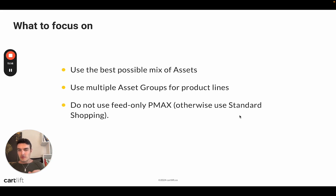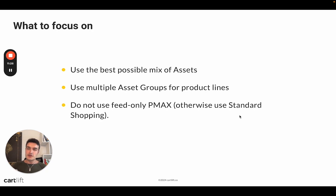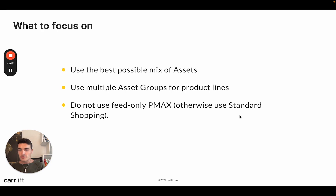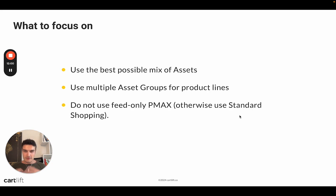Do not use the feed-only Performance Max campaign. Instead, use standard shopping if you don't have great assets. I see this all over the place — brands without amazing assets still want to use Performance Max and do so with shopping only, without using assets. But in that case, you're not getting the best out of shopping — all the data and multiple bidding strategies — and you also don't get the best out of Performance Max, which is going out to all those networks: shopping, search, display, demand gen, YouTube. You end up somewhere in the middle, which is quite the ugly place. If you're going to use shopping only or feed-only PMAX anyway, just use standard shopping instead — it will get you much further.